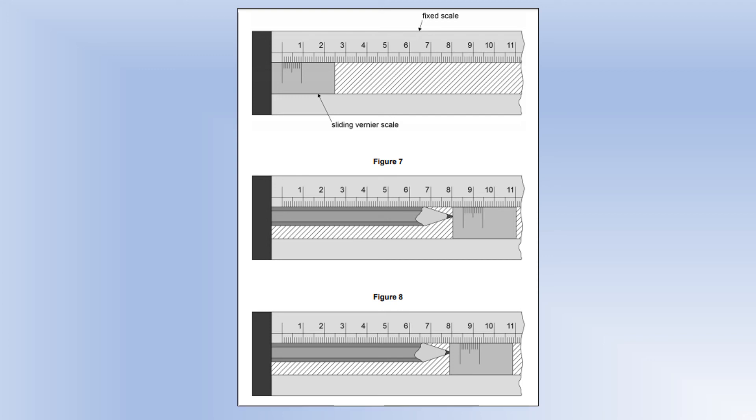What we're looking at is where the first large line on the vernier scale is, because that tells us how many millimeters it is. We can see that it's just gone past the 85 millimeters.